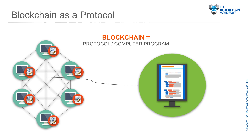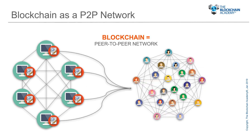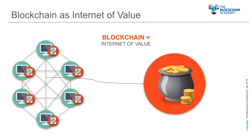Each computer in the peer-to-peer network runs this protocol, which determines how computers communicate with each other, how transactions are created, shared, and verified, and how database consensus and trust is created between participants. The term blockchain is also used to indicate other elements that surround the blockchain database — including the peer-to-peer network of participants that maintain and transact in the blockchain database — and last but not least, blockchain is also used to indicate the value system that blockchain enables, called the internet of value.